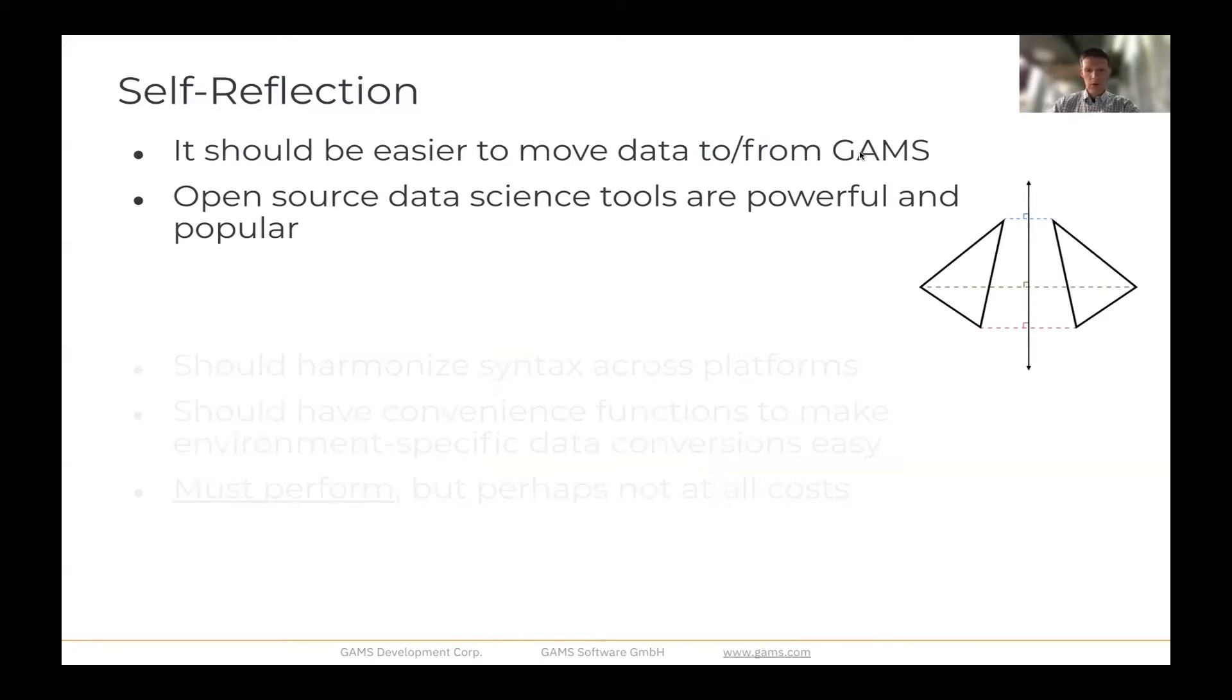A lot of users just want the data and access to it instead of having to make a lot of decisions about the shape and structure of the data before actually getting it. So we are going to take this on as a challenge in order to make a tool that will allow users to get quick access to the data. This new tool, GAMS Transfer, is going to leverage open source data science tools because they're powerful and popular.